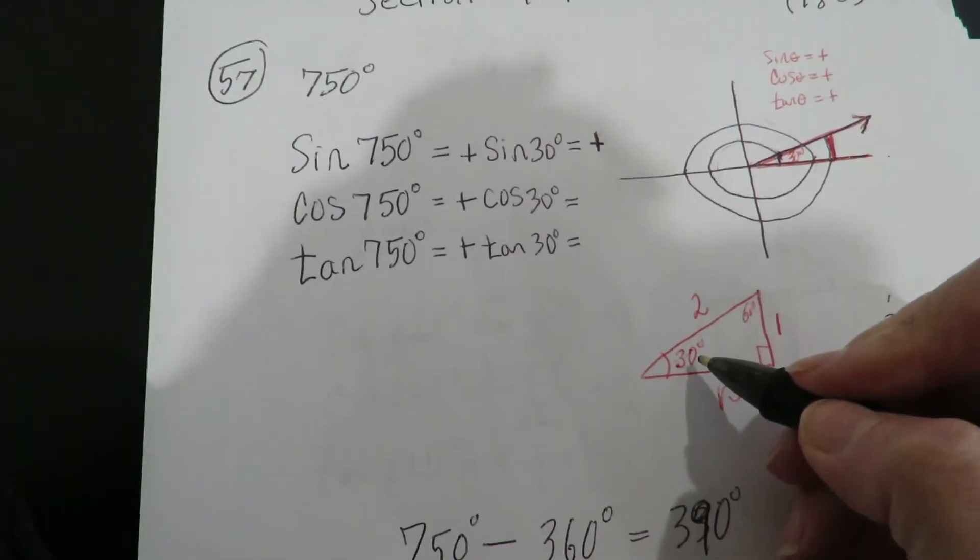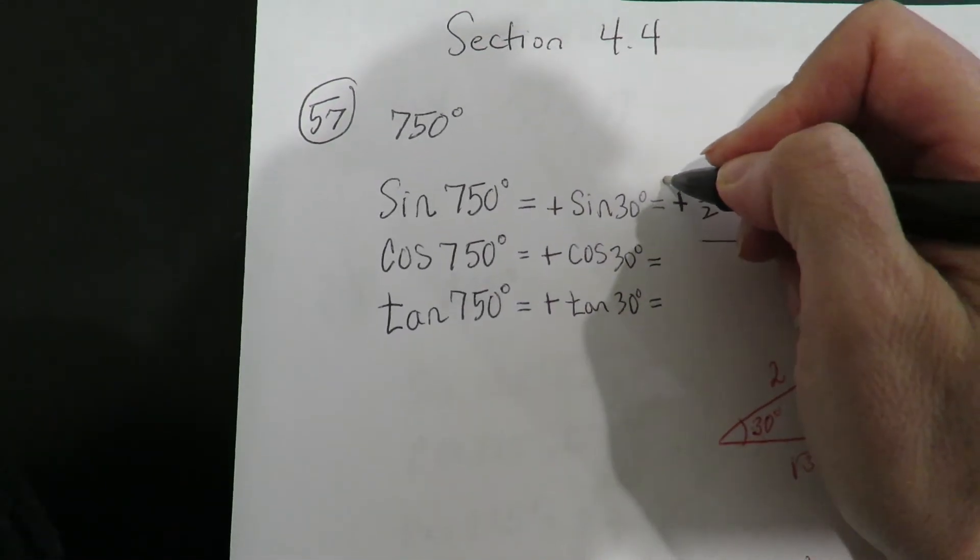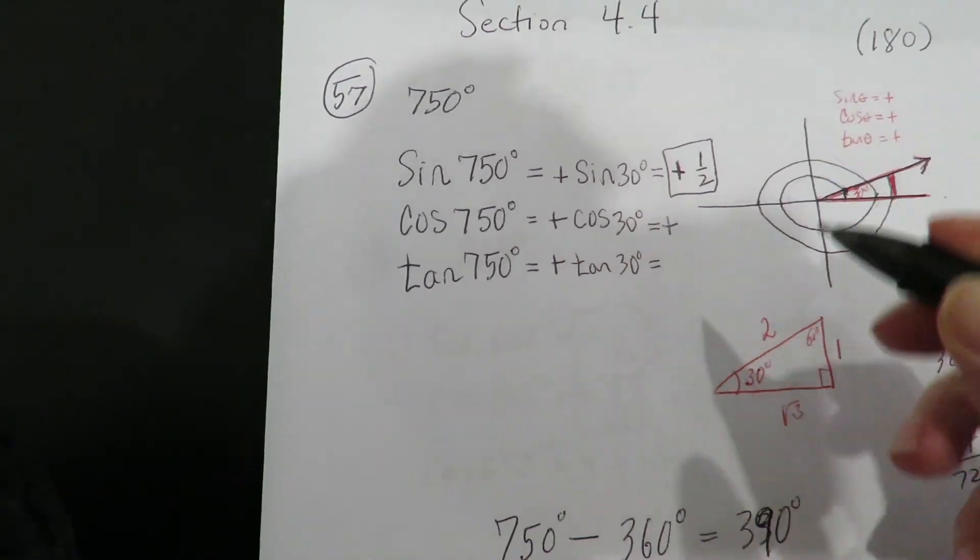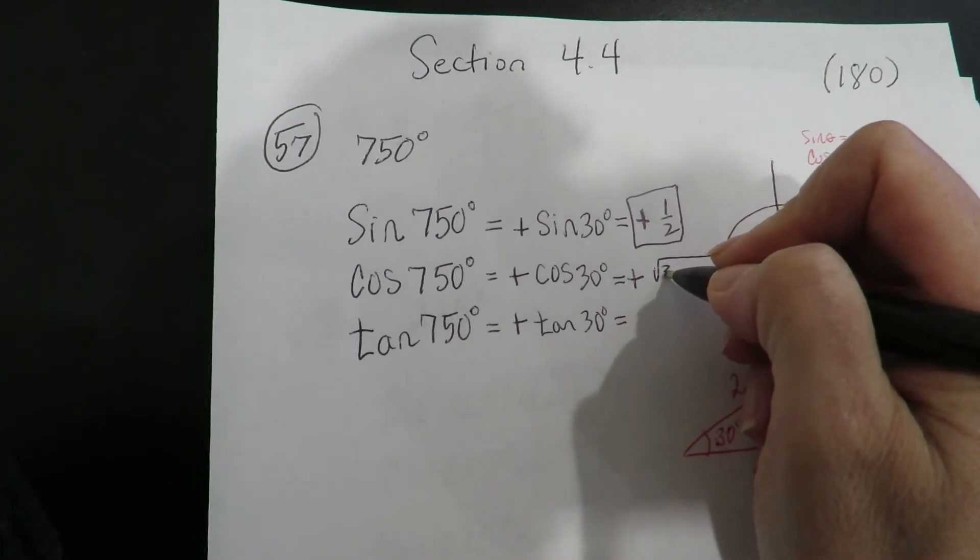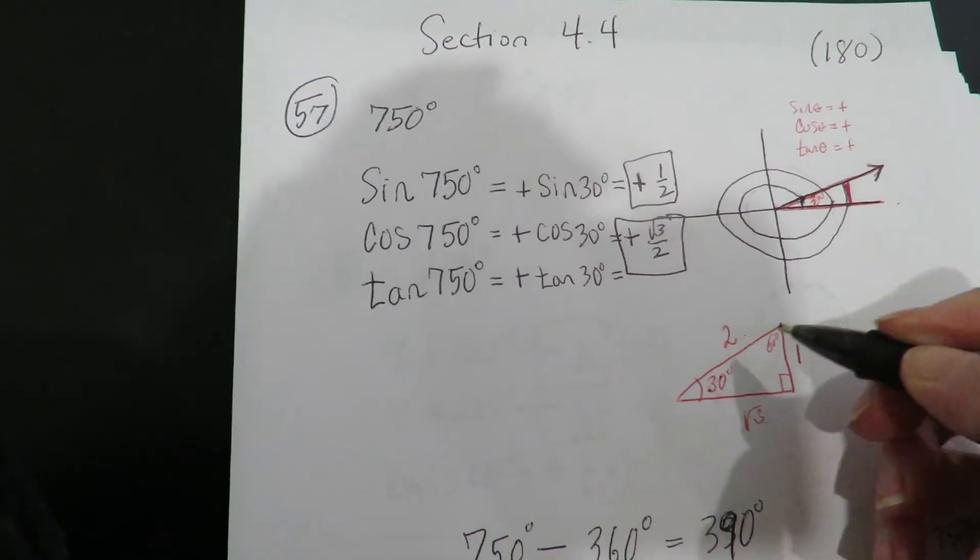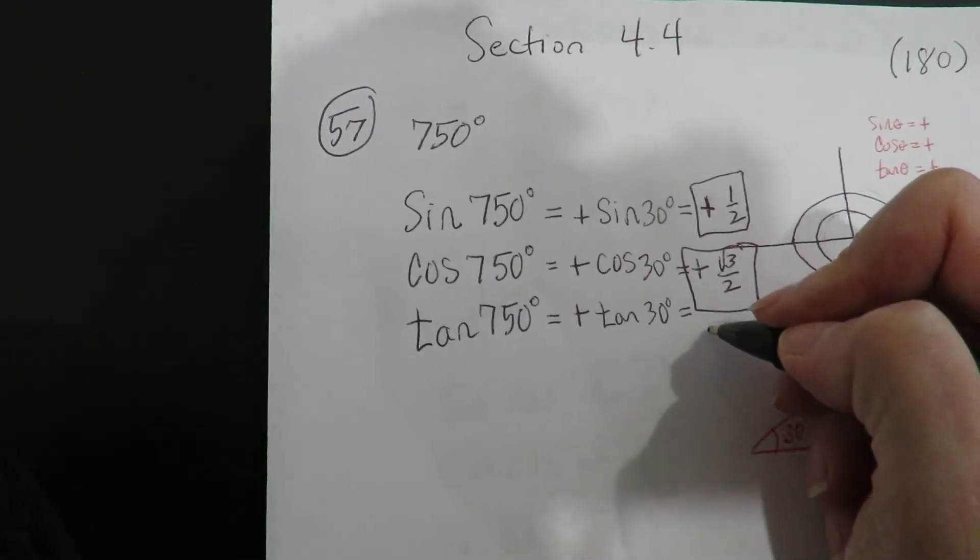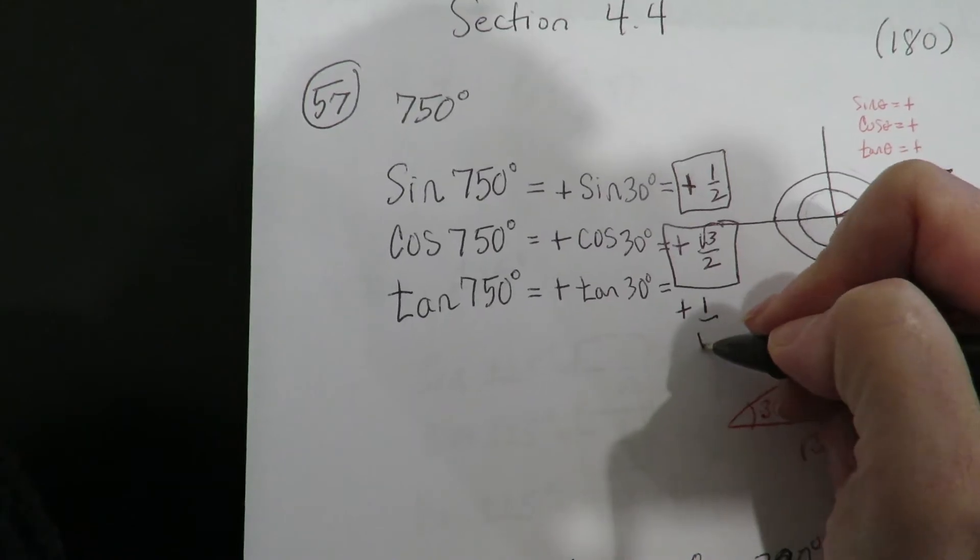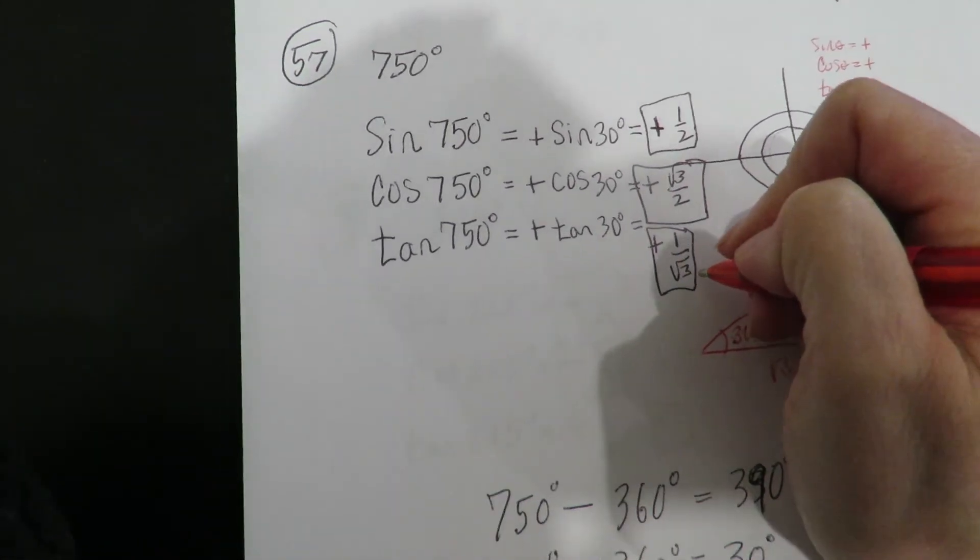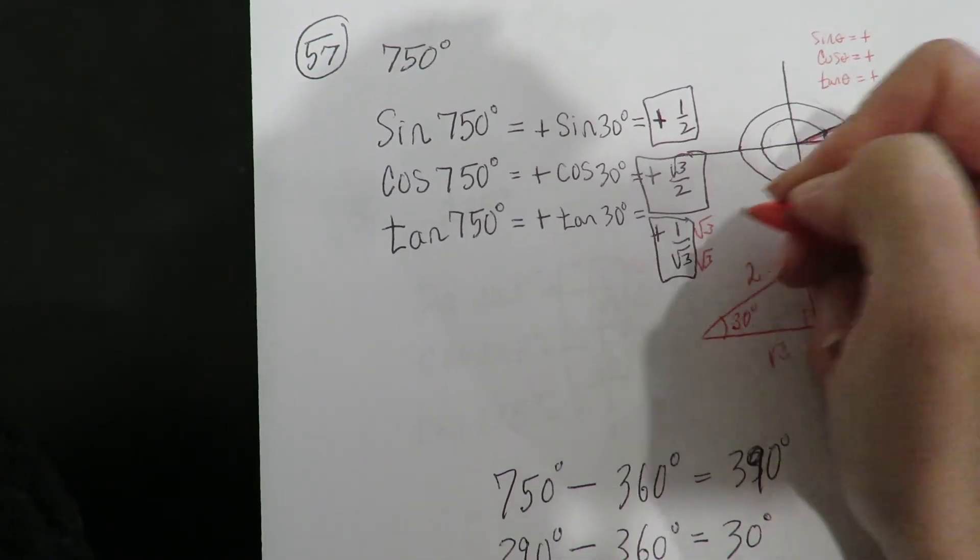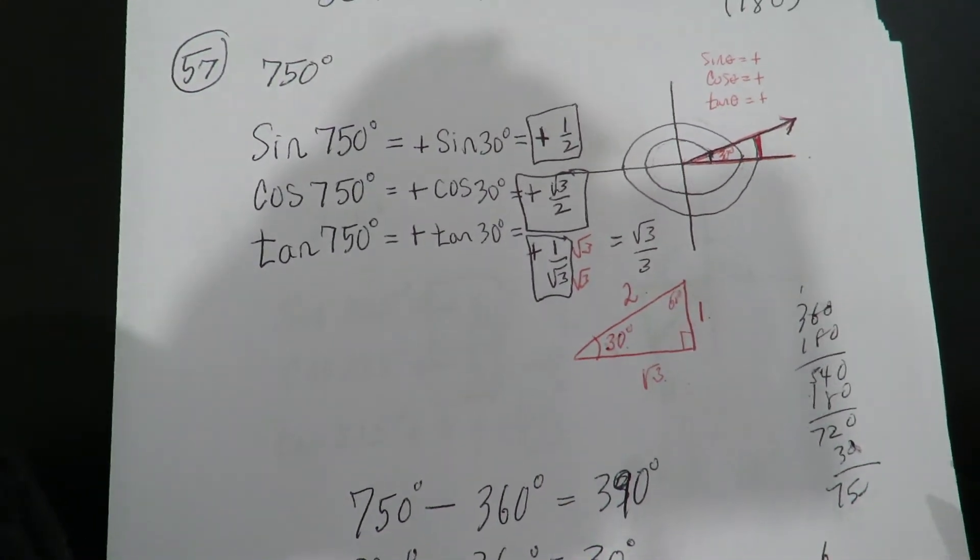So the sine of 30 is opposite over hypotenuse. So one half. Cosine of 30 is radical 3 over 2. Tangent of 30, opposite over adjacent. This is fine with me. If you did happen to rationalize tangent of 30, you did a radical 3 to both sides, which then would have given you radical 3 over 3. Either form is correct.